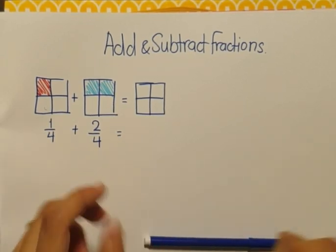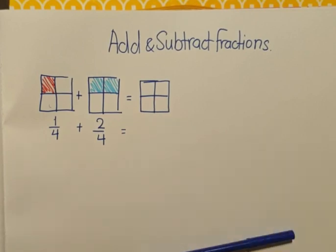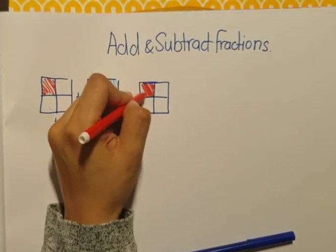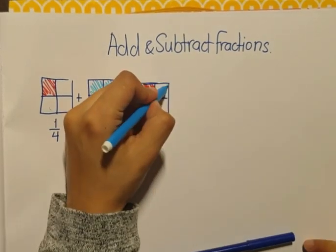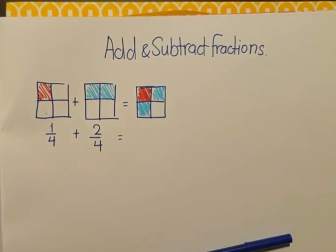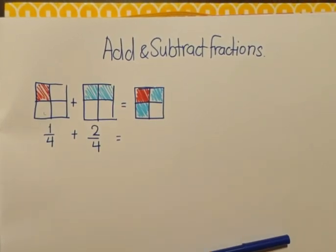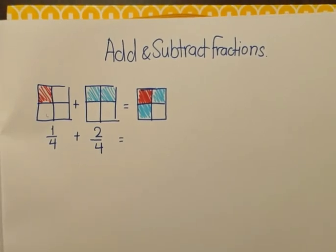So I'm going to shade the total number of parts here and here in this third square because this is the answer. Here's the one in red and here are the two ones in blue. So now I want to write this as a fraction.